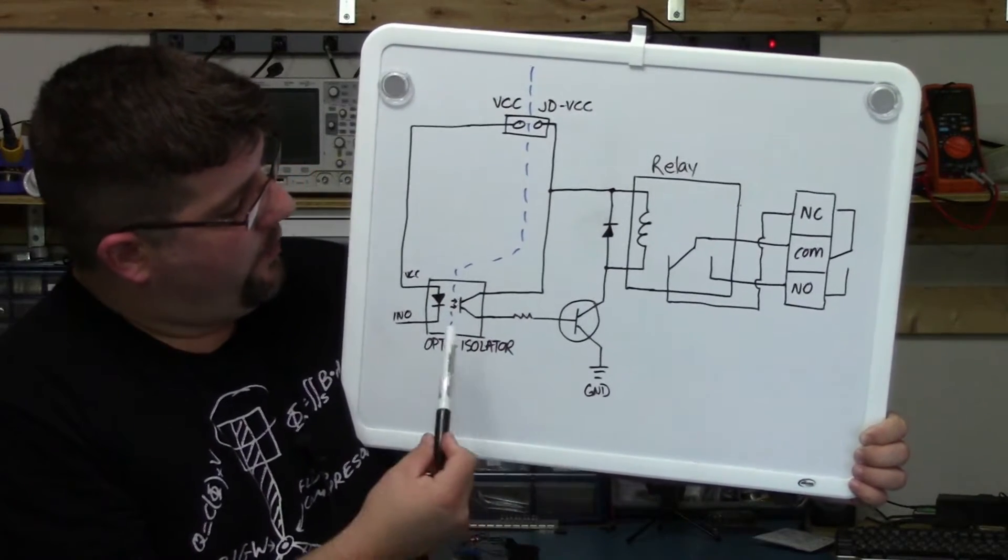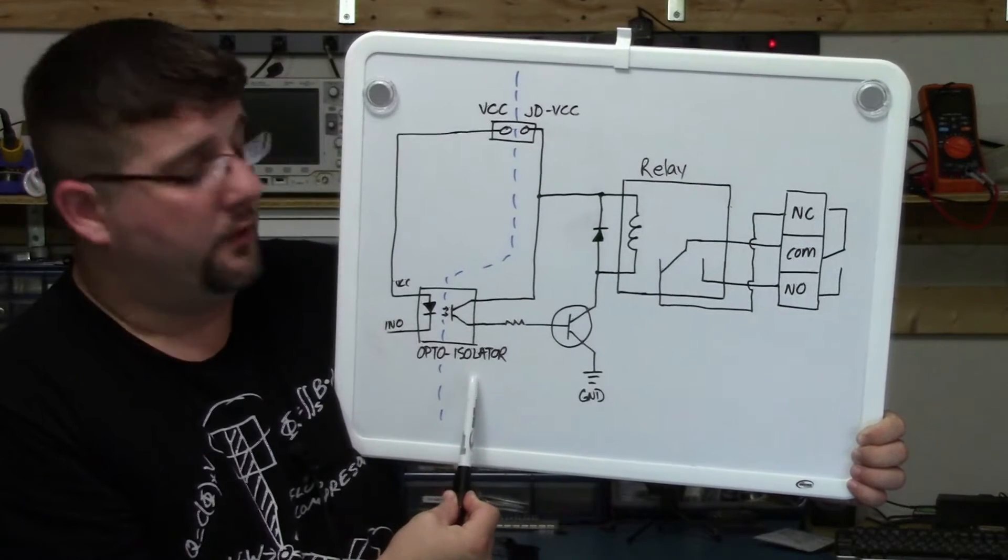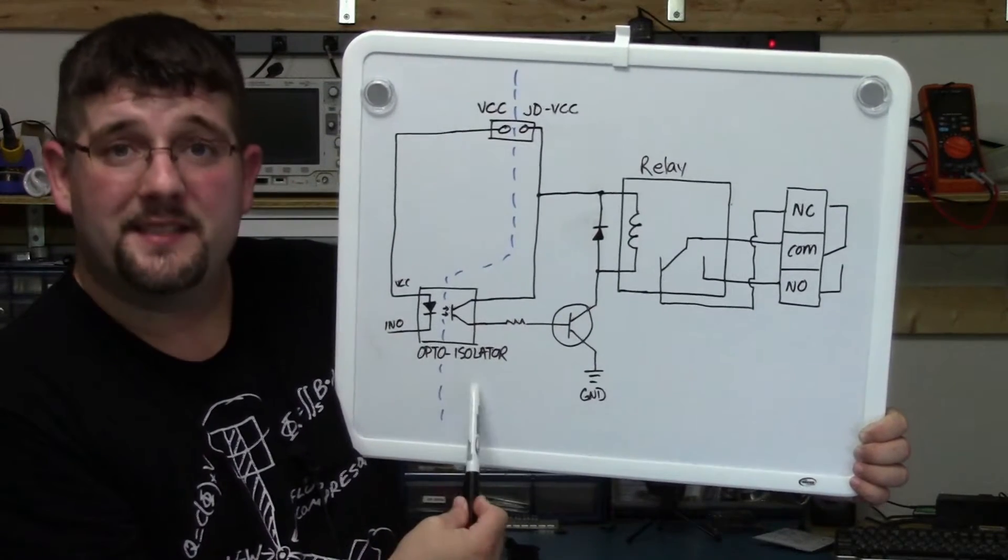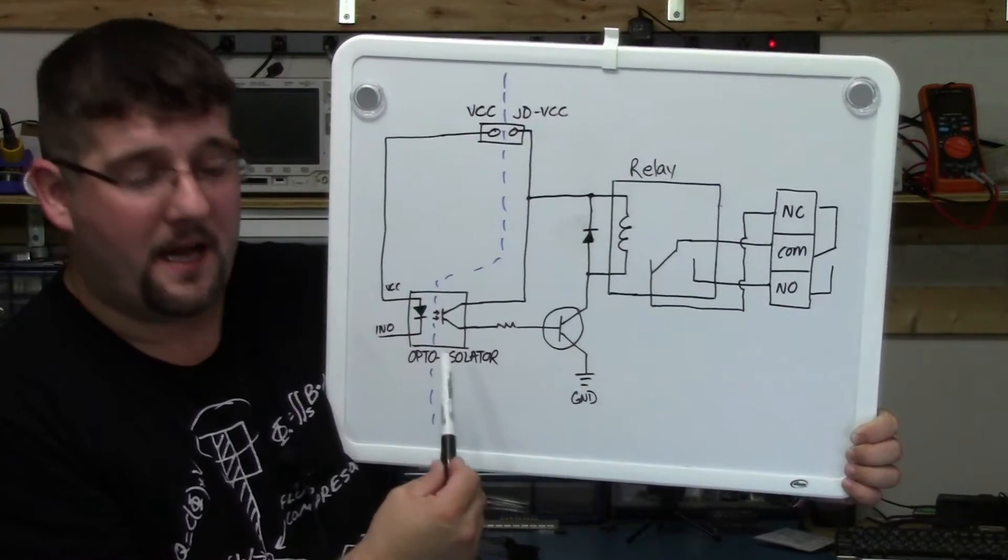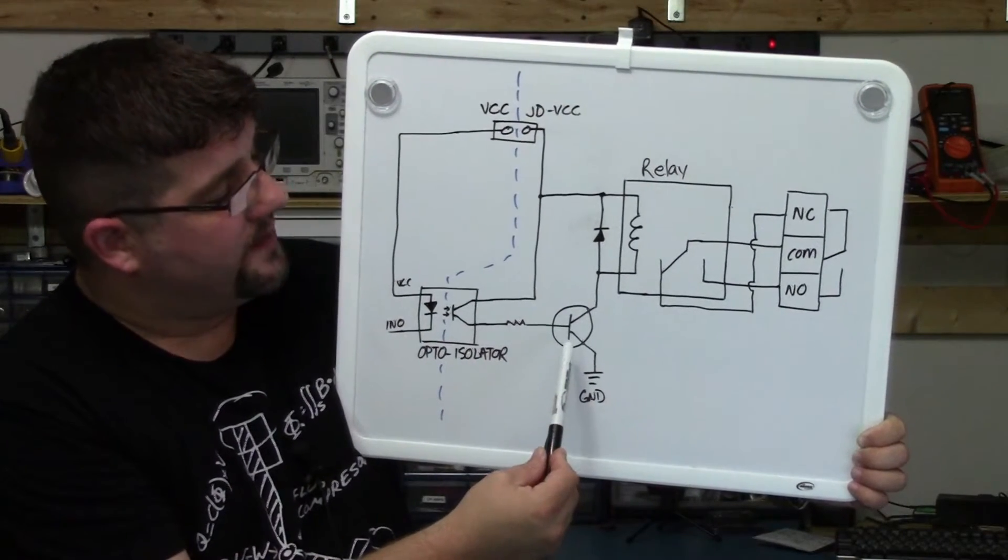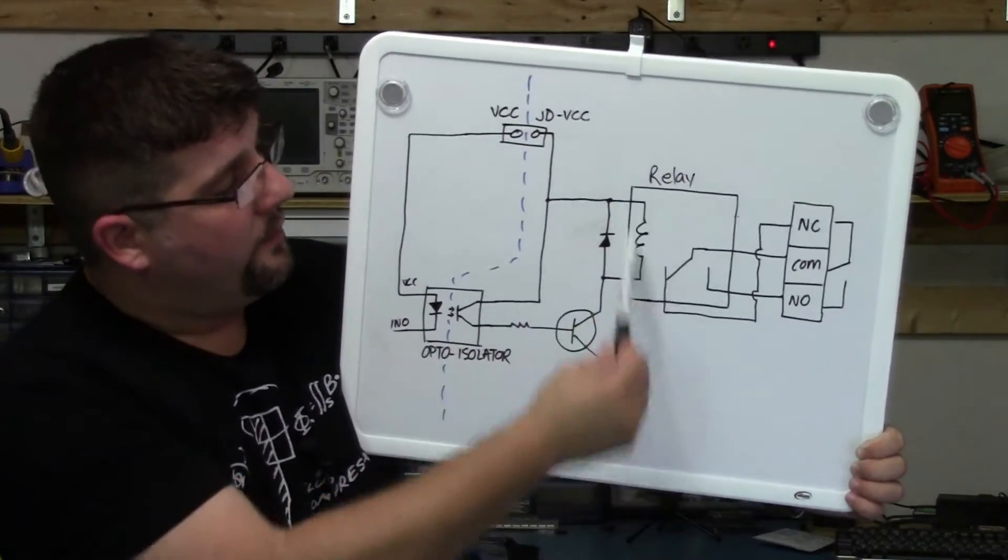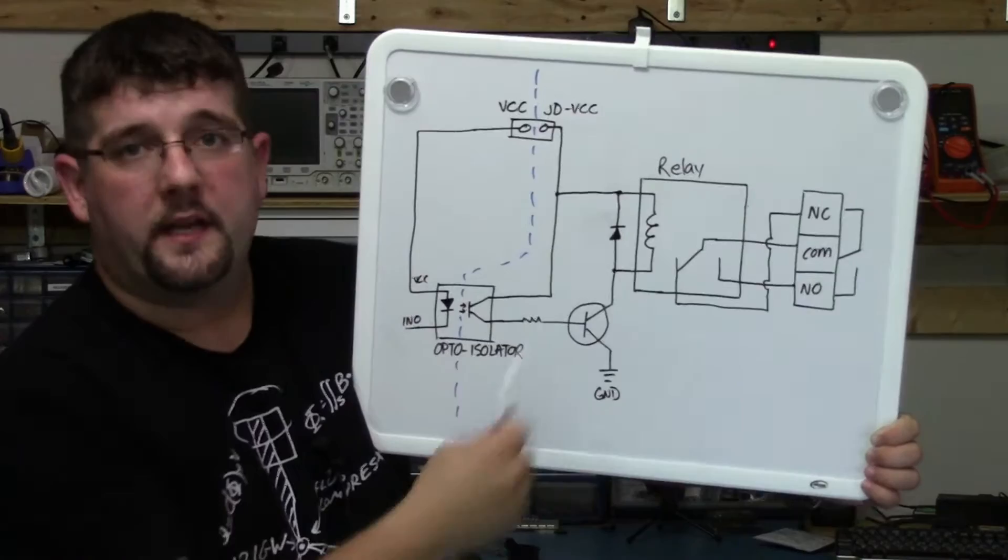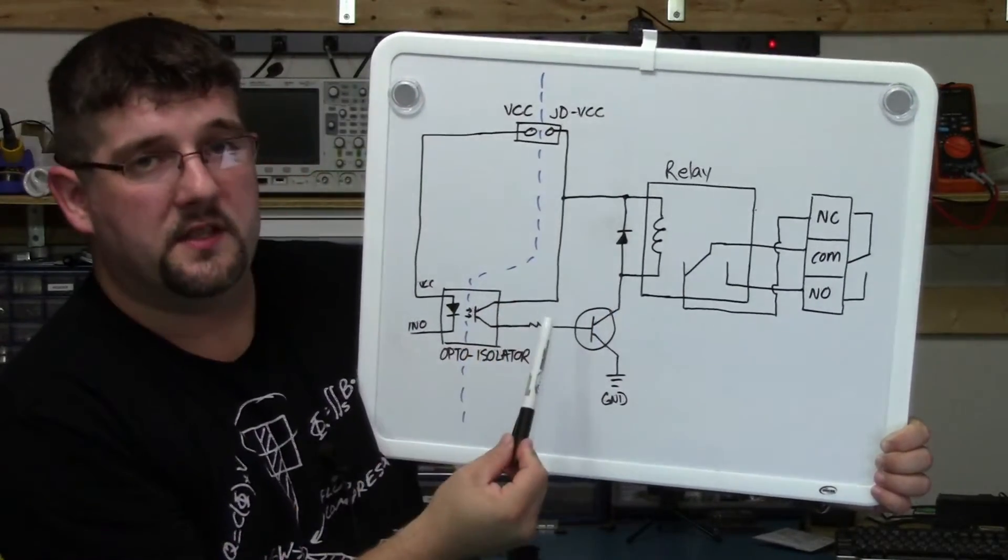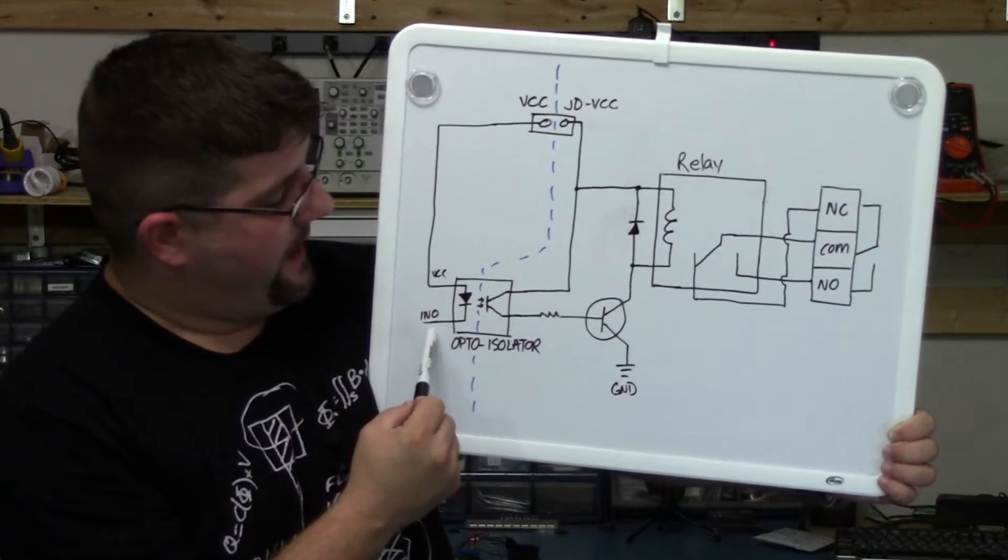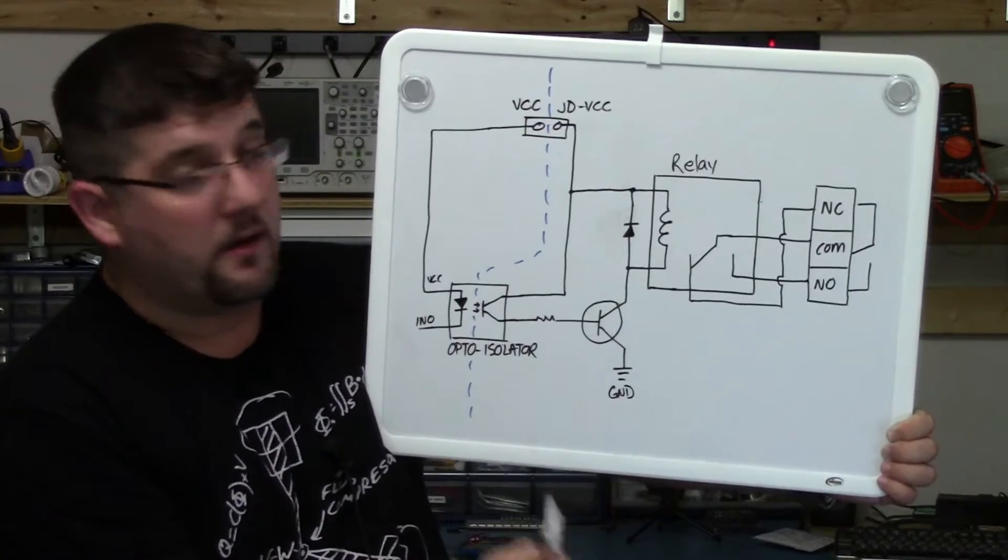Now there are a few key players here. One is the opto-isolator. Not all relay modules have it but a lot of them do. If yours doesn't I would suggest looking at getting a relay module that does have opto-isolators. Another key player is the transistor that allows our connection to go to ground. The relay itself. And then all the connections. For the connections we have VCC, JDVCC, our IN0 or IN1 inputs from the Arduino, and our ground connection.